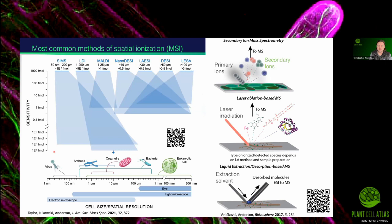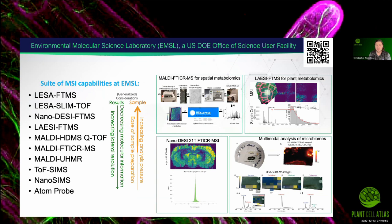There are a lot of different types of methods for spatial ionization and MSI, and we have a review — feel free to take pictures or use the QR codes in my talk. That's why I put them in there, and it's also one of the PCA policies, so please feel free to take pictures or screenshots. As noted, there are multiple different methods of doing spatial mass spectrometry, and all of them have their own benefits and limitations.